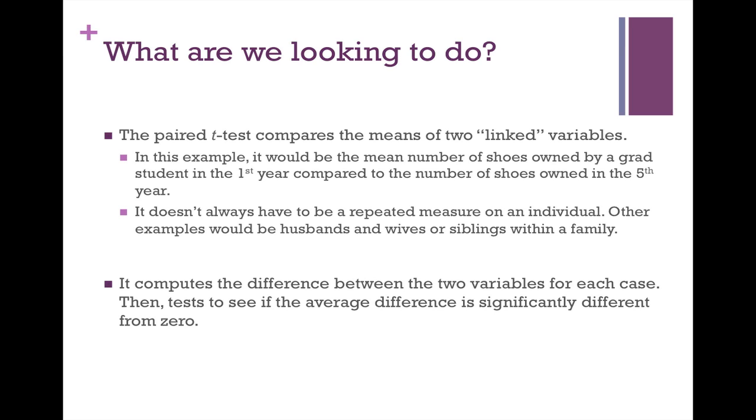Another example would be husband and wife pairs, or twins or siblings within one family. And what this does is it computes the difference between the two variables for each case, then tests to see if that average difference is significantly different from zero.